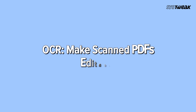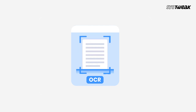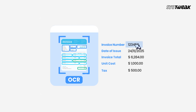OCR — make scanned PDFs editable. Got a scanned document or sensitive image you need to edit? Just use OCR. It reads text from scans and turns it into searchable, editable content. No retyping, and your confidential data stays safe.